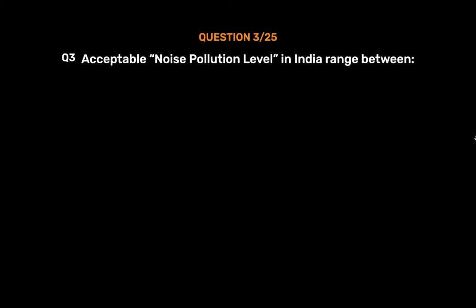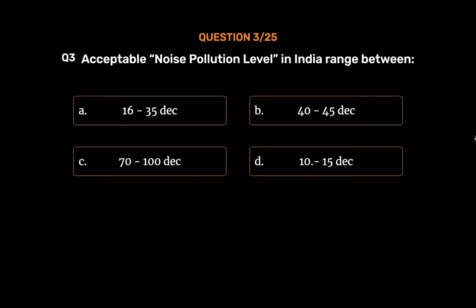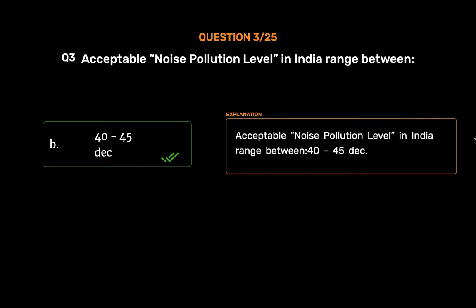Question No. 3. Acceptable noise pollution level in India ranges between: Option A. 16 to 35 decibels. Option B. 40 to 45 decibels. Option C. 70 to 100 decibels. Option D. 10 to 15 decibels. The correct answer is Option B, 40 to 45 decibels. Acceptable noise pollution level in India ranges between 40 to 45 decibels.